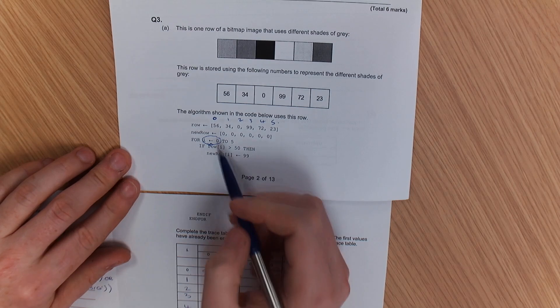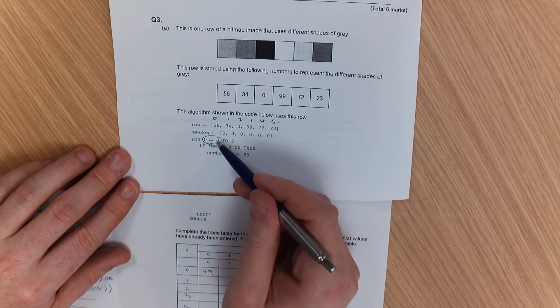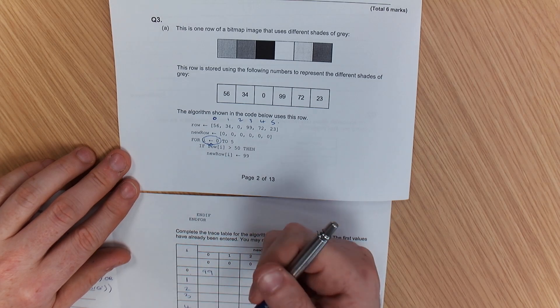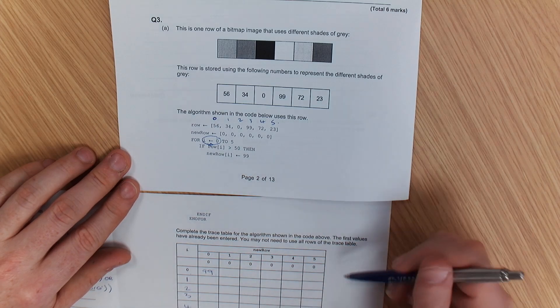So the golden rule to trace tables is, if you see an assignment, a new value has to go in. Now, if the value doesn't change, then you don't do anything with it.